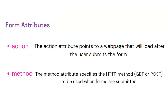We have the action attribute and the method attribute. The action attribute specifies which web page to go to once the form is submitted. The method can be GET request or POST request. In a GET request, the form data is appended to the URL. In a POST request, the form data is sent in the request body to the server.